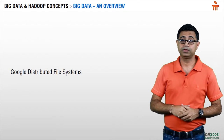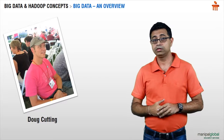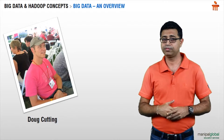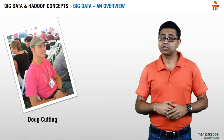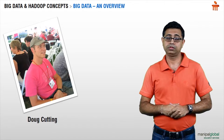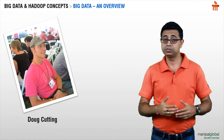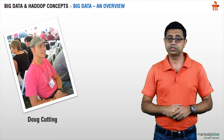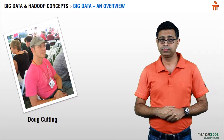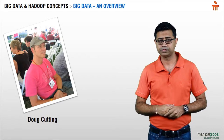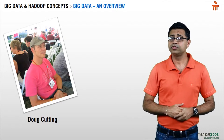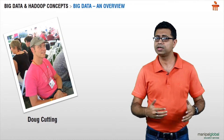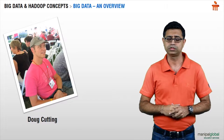At about the same time, a person by the name Doug Cutting, who came from a search framework development background, was also working on the same problem. Doug Cutting is the inventor of the Lucene search engine — the very popular Lucene search engine, very famously used in the Java world. Doug Cutting saw that white paper and started making an implementation of it. That started happening somewhere around 2002–2003.